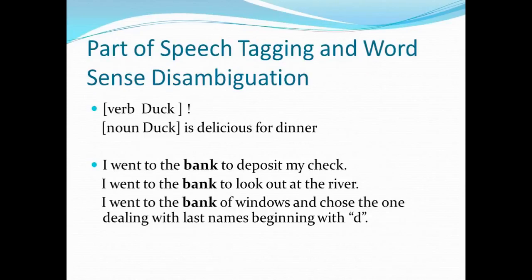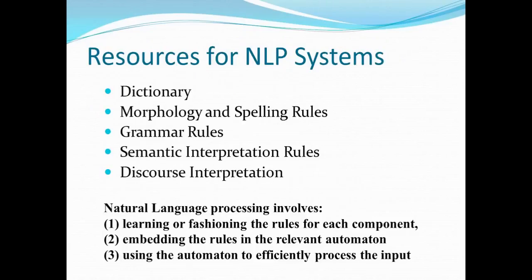The same word 'duck' can be 'duck is delicious for dinner.' Similarly, 'I went to the bank to deposit my check,' 'I went to the bank to work out at the river,' 'I went to the bank of windows and chose the one dealing with last names beginning with D.' What do we need to help? A lot of different resources: dictionary, morphology, spelling rules, grammar rules, semantic interpretation rules, discourse interpretation. Natural language processing involves learning or fashioning rules for each component, embedding them in machinery, and finding an efficient way to process input.